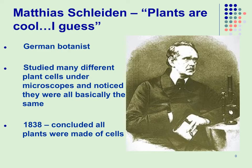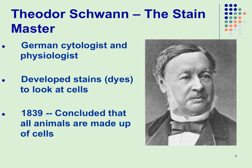The next scientist we're going to talk about is Matthias Schleiden. He was a botanist and he spent his time studying plants. He looked at all kinds of plant cells underneath the microscope, and because of his work in 1838 he concluded that all plants were made up of cells.